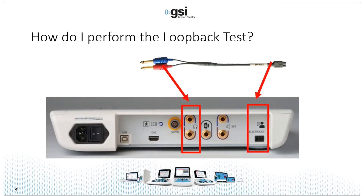To perform the test you need the loopback cable included with your system. You're going to unplug the insert earphones from the back of the Audera Pro and plug in the loopback test cable, blue to blue and red to red, making sure it's firmly inserted. Then unplug your patient cable and plug in the other end of the loopback test cable into that same port.